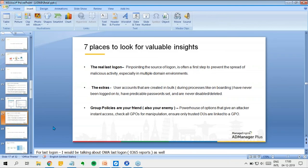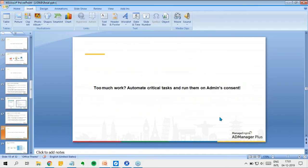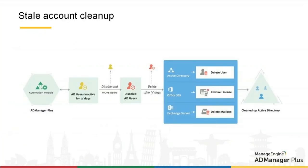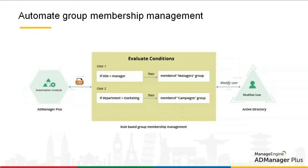This might look cumbersome — generating reports and taking actions repeatedly. To overcome this, AD Manager Plus also has automation. For example, the Stale Account Cleaner can find all stale users for a specified time and carry out cleanup activities across Active Directory, Office 365, and Exchange Server, cleaning your hybrid environment. Another example is automatic group membership management — when users are onboarded, you can ensure they are added to the correct groups only. If users are already in wrong groups, you can re-edit them. All of this can be automated while keeping the administrator in the loop at all times.